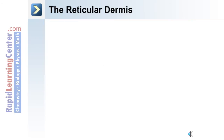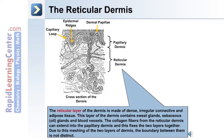The second layer, or deeper layer of the dermis, is the reticular dermis. This is made of a dense irregular connective tissue and adipose tissue. The reticular dermis contains sweat glands, sebaceous oil glands, and blood vessels. The collagen fibers from the reticular dermis extend into the papillary dermis, fixing the two layers together. Because of this meshing of the two layers, the boundary between the reticular dermis and the papillary dermis is not necessarily distinct.